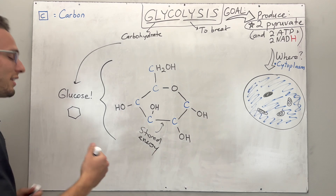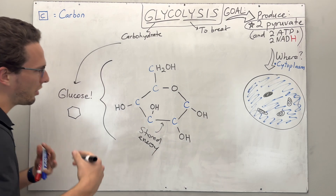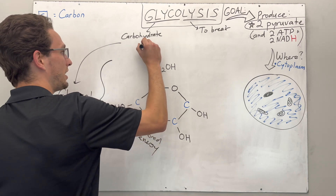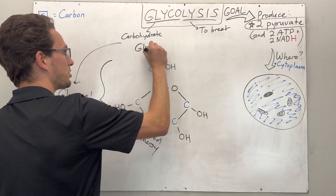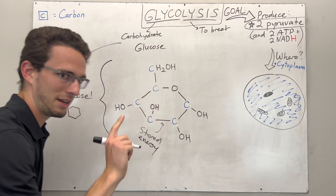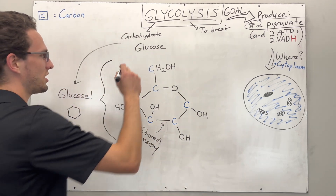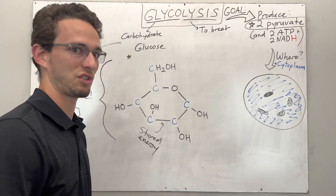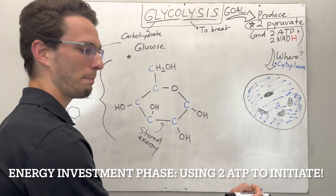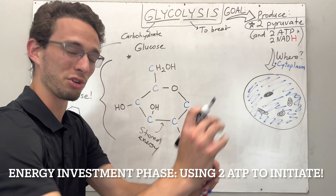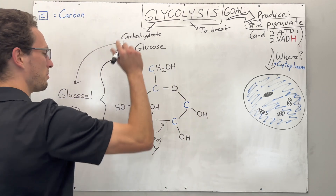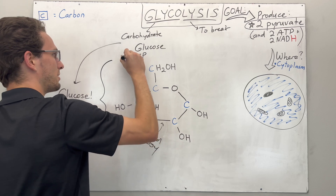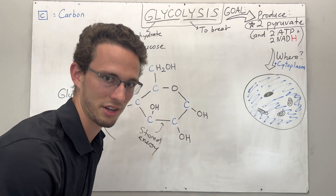Let's get back to the beginning: glycolysis. What are the ingredients? Simply put, the only thing we really need to start is glucose. But at the same time, this needs a little spark — this is called the energy investment phase. It's like we're lighting a little match to let the whole flame go. So we need a little bit of input beforehand, and that's going to be in the form of ATP. Specifically, 2 ATP is going to kickstart this process.